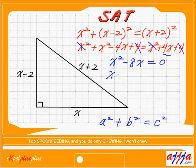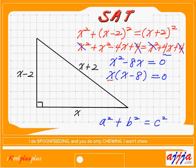Now I'm going to factor x outside. That means x times x minus 8 equals 0. So x equals 0 or x equals 8. I'm not going to take 0, so x equals 8.